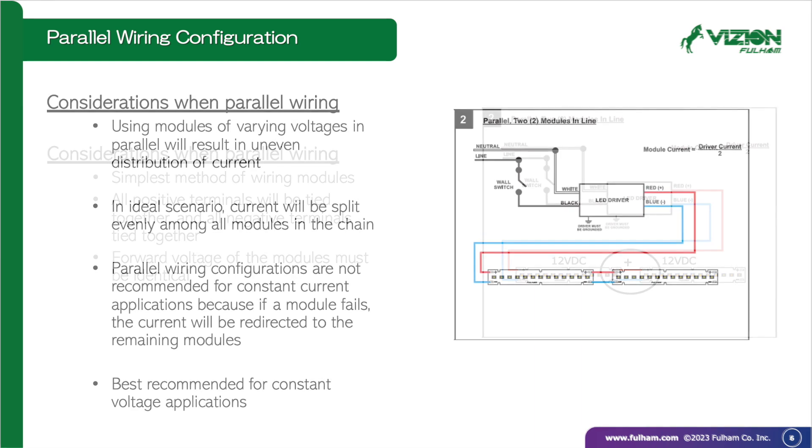With ideal module voltages, the output current of the LED driver will be split evenly by the number of modules in the chain. Please note that these wiring configurations are not recommended for constant current module applications, because failure of one module will cause all the current to redirect to the remaining modules. These are best recommended for constant voltage applications.